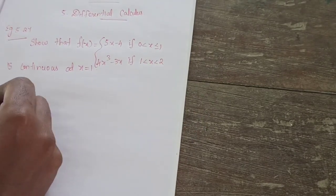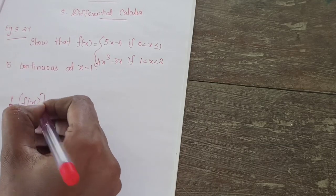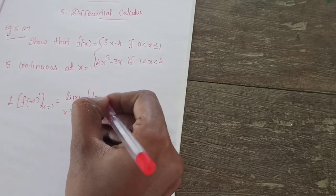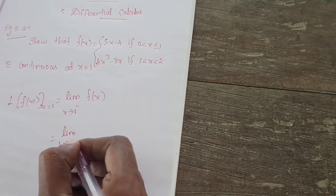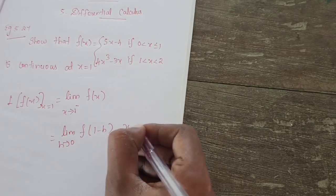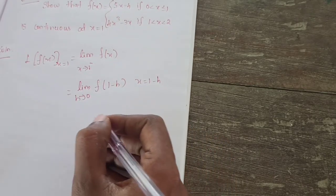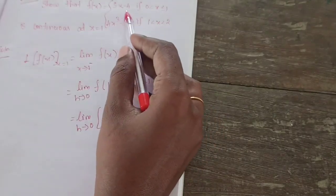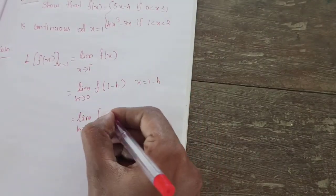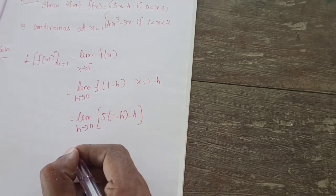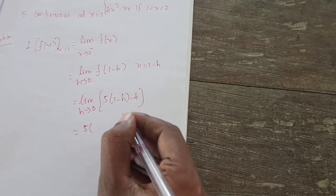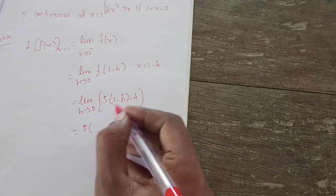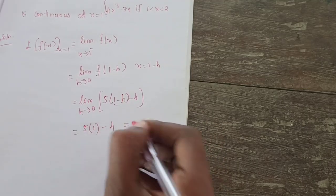Solution. First find the left hand limit: L of f of x at x equal to 1 is equal to limit x tends to 1 minus of f of x. That is equal to limit h tends to 0 of f of 1 minus h, where x equal to 1 minus h. We check here 5x minus 4. So in that place we substitute: 5 into 1 minus h minus 4. Applying the limit as h tends to 0, that gives 5 into 1 minus 4, which equals 1.